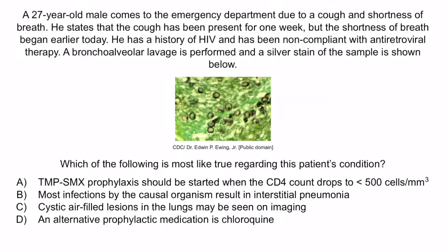Now let's review with a question. A 27-year-old male comes to the emergency department due to a cough and shortness of breath. He states that the cough has been present for one week, but the shortness of breath began earlier today. He has a history of HIV and has been non-compliant with antiretroviral therapy. A bronchoalveolar lavage is performed, and a silver stain of the sample is shown. Which of the following is most likely true? A: TMP-SMX prophylaxis should be started when the CD4 count drops to less than 500. B: Most infections by the causal organism result in interstitial pneumonia. C: Cystic air-filled lesions in the lungs may be seen on imaging. D: An alternative prophylactic medication is chloroquine. The patient's cough, shortness of breath, history of HIV, and the silver stain showing cysts that resemble yeast cells should make you think of Pneumocystis jirovecii. You can see the cysts quite clearly in the image.